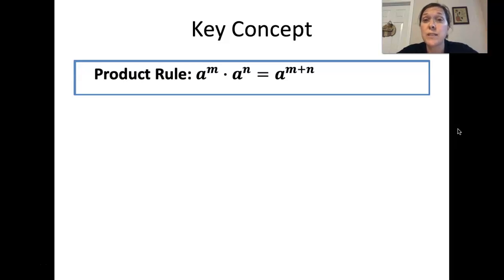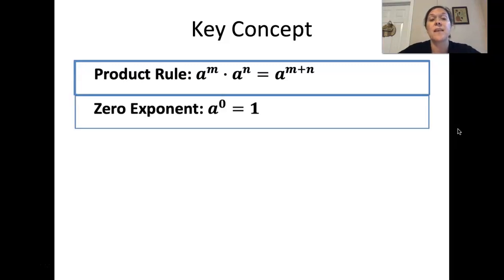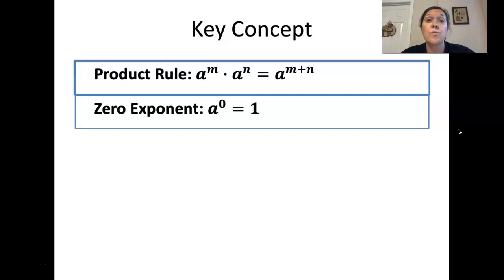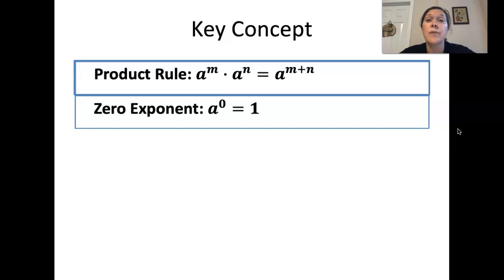Pause this video at any point in time that you feel like you need to get caught up. Our zero exponent tells us that any base to a zero power is going to be equal to 1. You could have a whole wide variety of different things, but if you have it to the zero power, it will be equal to 1.